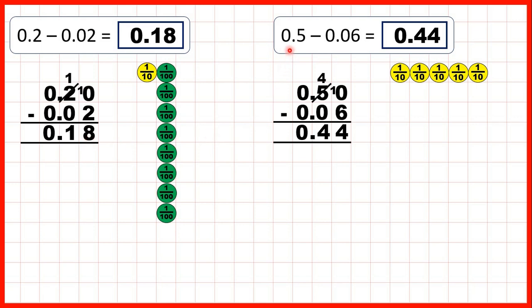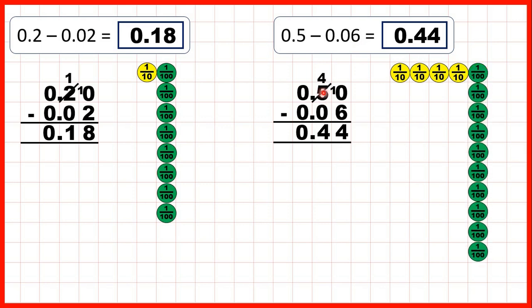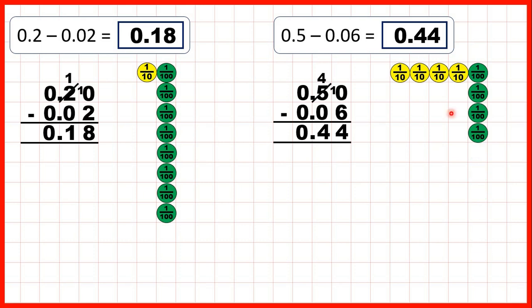Then for this question, we started with 0.5, so five tenths, but we wanted to subtract six hundredths. So we exchanged one of our tenths for ten hundredths. That meant that we could subtract one, two, three, four, five, six hundredths, to give us four tenths and four hundredths, or 0.44.